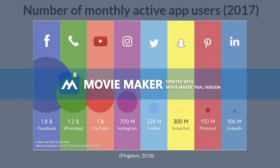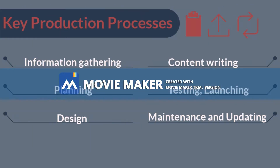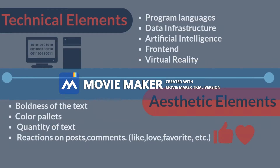Here we can see the number of monthly active users in 2017. For now I'll talk a little bit about the key production process. First it's information gathering, then planning, and then design. After that comes content writing, testing and launching the site, and after that maintenance and updating.